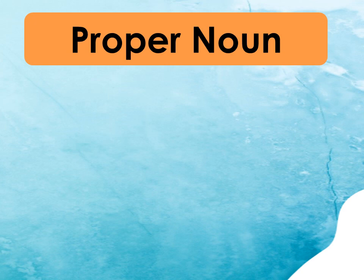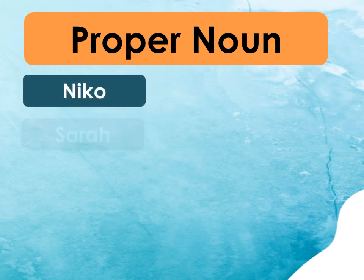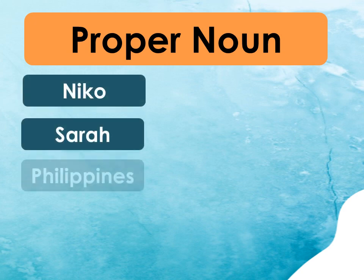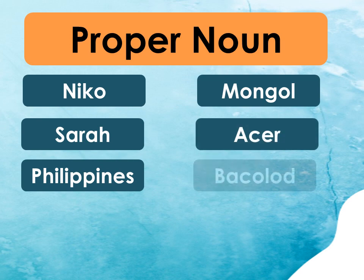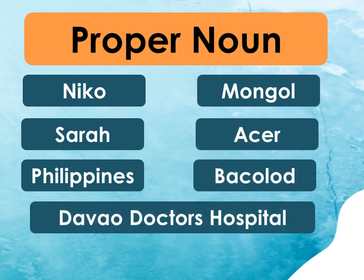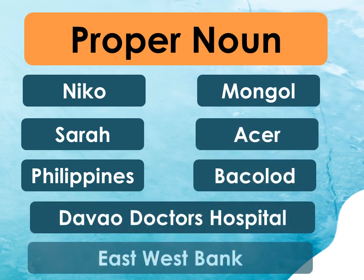Examples of proper nouns are: Niko, Sarah, Philippines, Mongol, Acer, Bacolod, Davao Doctors Hospital, East West Bank. These are examples of proper nouns.